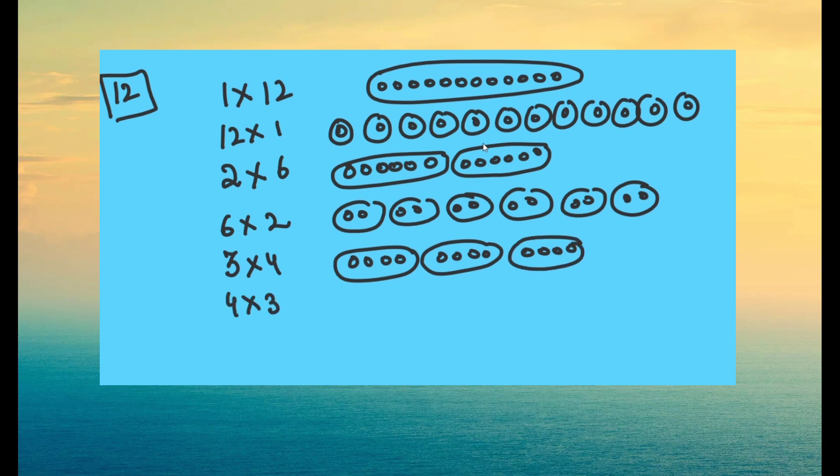Another way is four threes are twelve. And that means four groups of three. So here they come up on the screen.